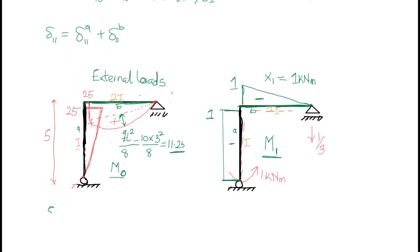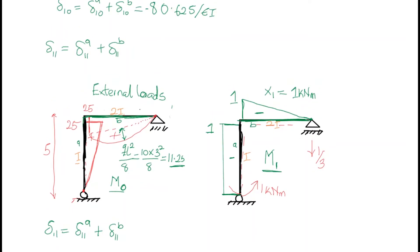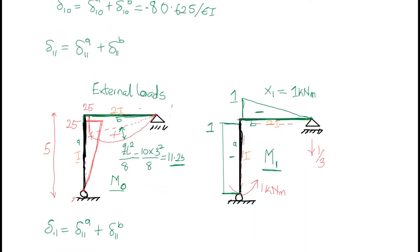Delta_11 as we wrote above is equal to delta_11a for the first part plus delta_11b. If you don't know what's going on, please try to watch the previous video and try to catch up. So let's continue — we want to find delta_11, which means we are going to multiply M1 times M1 using the table.